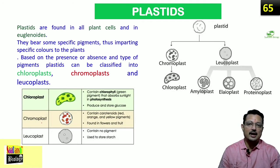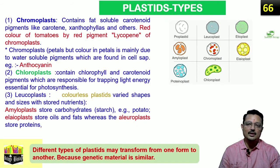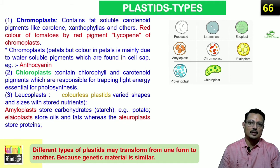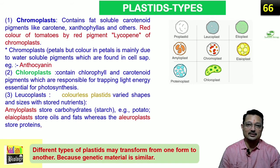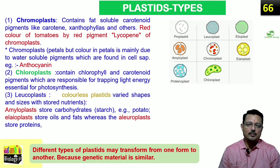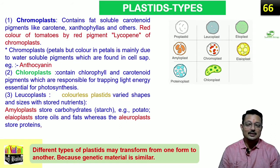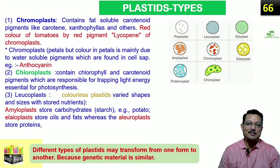Leucoplasts do not have any pigment, but they perform a very important storage function. To review: chromoplasts contain fat-soluble carotenoid pigments like carotene, xanthophyll, and others — including lycopene in tomatoes. You may wonder if petals also have chromoplasts — yes, there are some chromoplasts, but majorly the color of petals comes from water-soluble pigments present in the cell sap, such as anthocyanins.